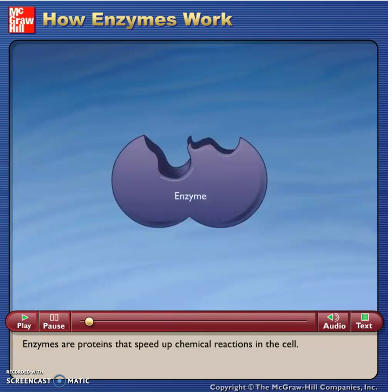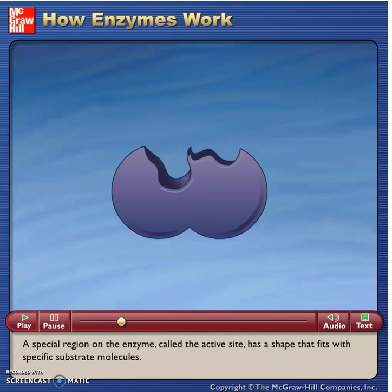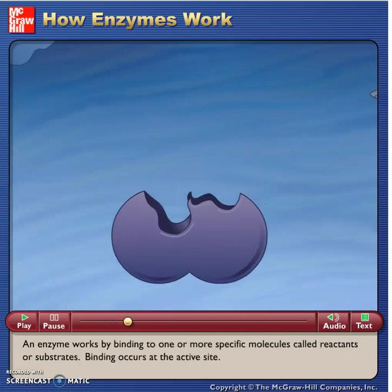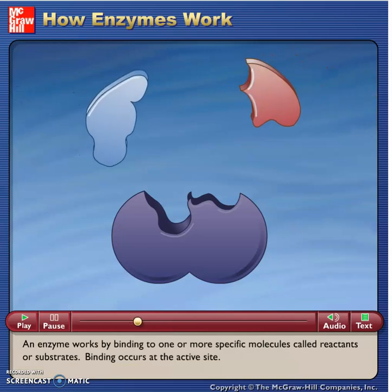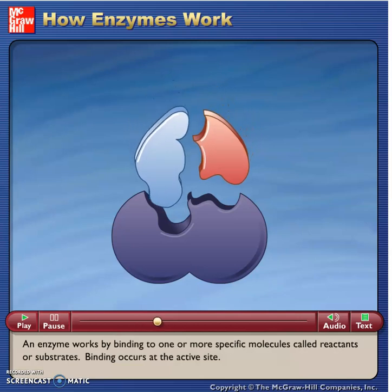Enzymes are proteins that speed up chemical reactions in the cell. A special region on the enzyme called the active site has a shape that fits with specific substrate molecules. An enzyme works by binding to one or more specific molecules called reactants or substrates. Binding occurs at the active site.